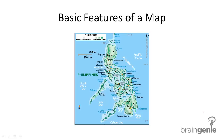Here's a map. Let's identify where those four features are. First, we're looking for the title. Titles are usually at the top — here it says 'Philippines,' so we know we're looking at a map of the Philippines. The title also appears down here, so this map shows the title in two places.